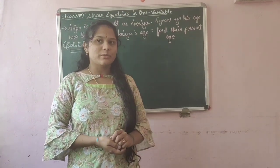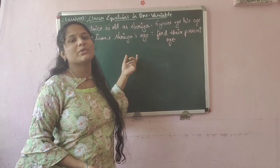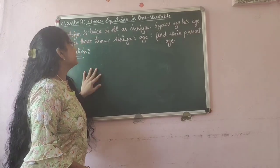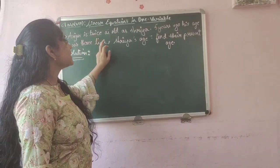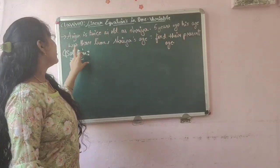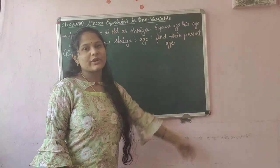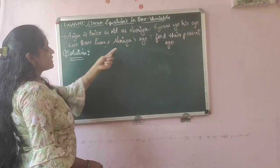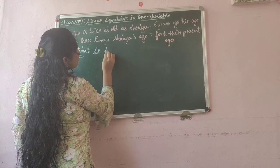Let us now enter into word problems, where the question is given in sentence form and we have to convert it into an equation and solve. Let us take this example: Arjun is twice as old as Shriya. Five years ago, his age was 3 times Shriya's age. We have to find the present age. Let Shriya's present age be x.